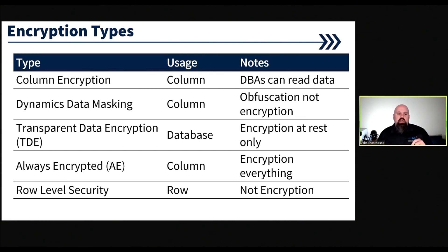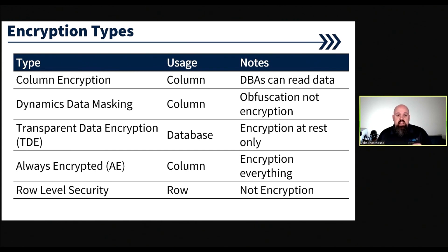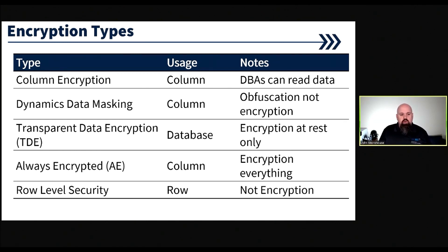Always Encrypted lets us specify encryption at individual column levels. What's nice about Always Encrypted is that when it's implemented correctly, I can actually lock out my DBAs from seeing the unencrypted values — even as sysadmin. SQL Server really doesn't have any knowledge of the keys, which helps protect that information from DBAs and sysadmins. And then we have row-level security, which is really not encryption either. What row-level security does is prevent certain individuals from seeing data based on some row criteria. The data is still not encrypted on the backend — if you were ever able to break the security, you would be able to see what that data is.